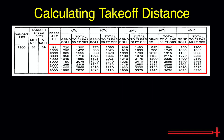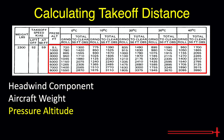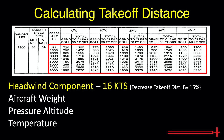These takeoff distances are determined by four factors: winds, weight, pressure altitude, and temperature. For winds, we expect a headwind component of 16 knots. For weight, we are using the maximum for this example. Let's say that pressure altitude at Imagination Land Airport today, based on the altimeter setting reported in the METAR, is roughly 3,300 feet.